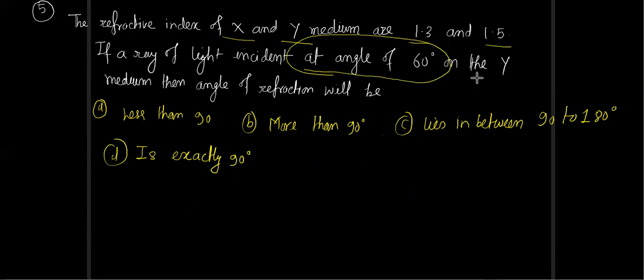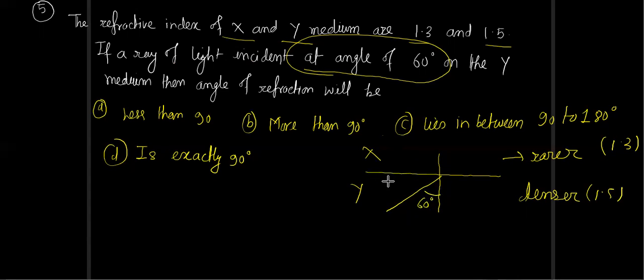Next question: the refractive index of x and y medium are 1.3 and 1.5. If a ray of light is incident at an angle of 60 degrees on the y medium, then the angle of refraction will be what? Here, y medium is the denser medium with refractive index 1.5, and x medium is the rarer medium with refractive index 1.3. Light is moving from denser to rarer medium with an angle of incidence of 60 degrees.